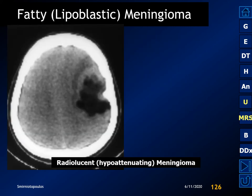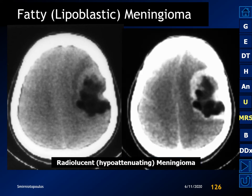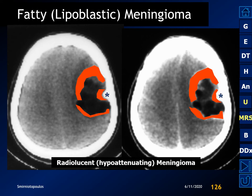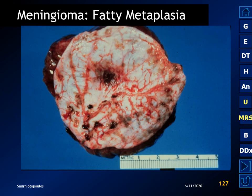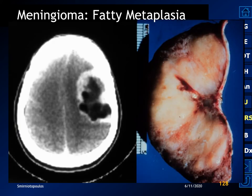Here's a classic example of fatty metaplasia or a lipoblastic meningioma: an abnormally low-attenuating hemispheric mass with a peripheral rim of hyperattenuation, with parts of the tumor showing the expected attenuation of a meningioma and hyperostosis. The presence of hyperostosis is key in identifying this as a meningioma. The gross specimen shows the yellowish color of fat instead of the meaty color of a typical meningioma, with a meaty part of the tumor adjacent to the hyperostosis.